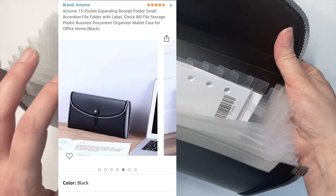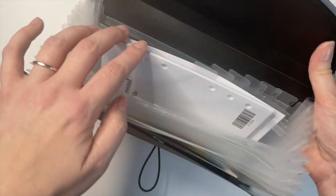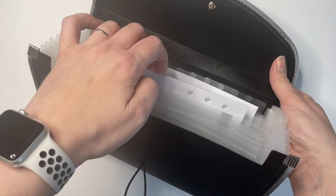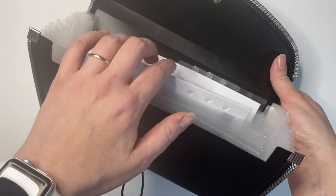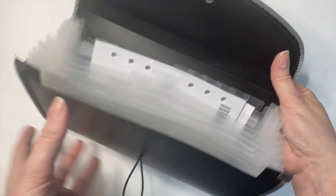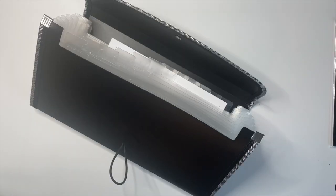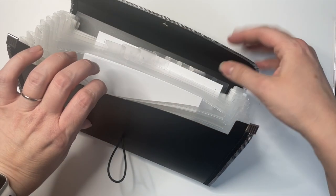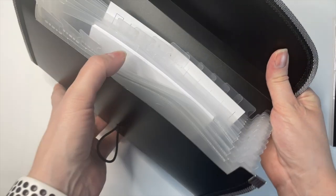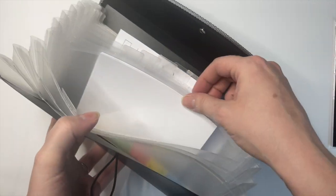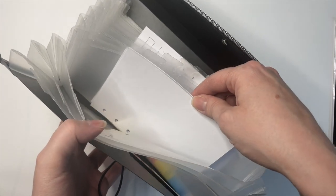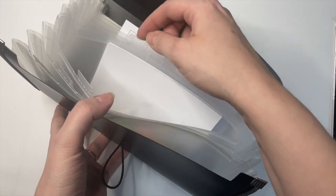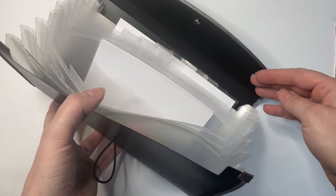Another thing you could use it for would be to put inserts that you haven't used yet or blank inserts in here. For personal wide size, they do stick up a little bit here. If you have pocket inserts that you've already cut to size or A6, or even personal size, those would fit really well in here to where you could see your labels really clearly.